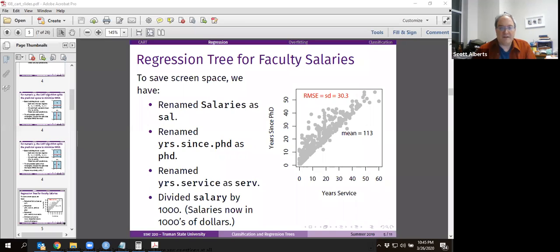So on the left will be the tree that we make here in a second. On the right is our chart with our splits. If we do our super simple naive model, we just assume that everyone makes $113,000. Yes, that's way more than Truman's faculty make.